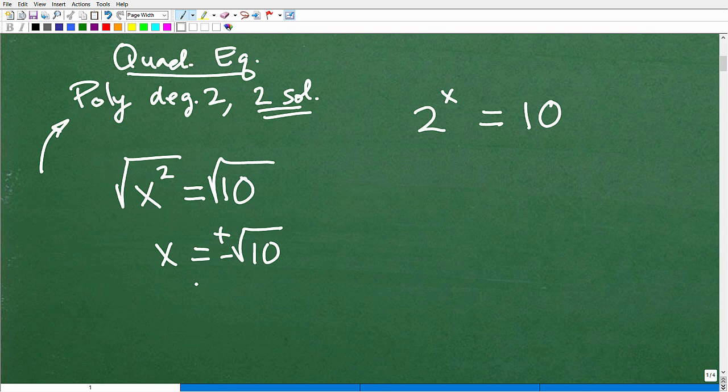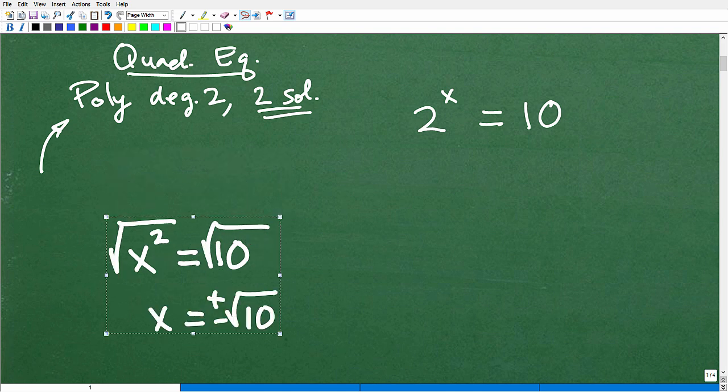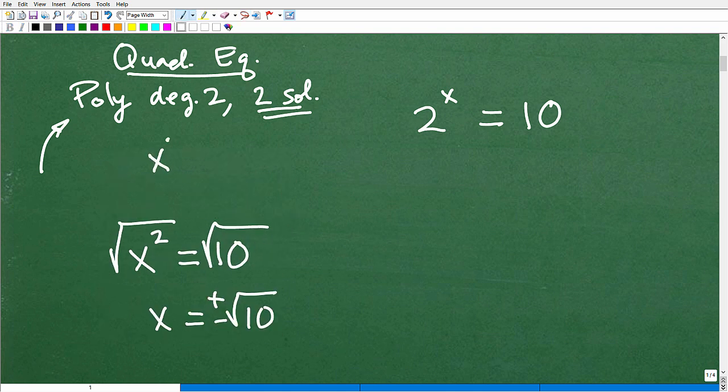So now we come to a completely different situation. We had x squared is equal to 10. Looks kind of similar to this. And we solved it in this manner. What about this guy? What is this? Well, this type of equation right here is completely different. We refer to this as an exponential equation.